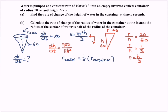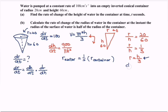Apply the chain rule: dr/dt = (dh/dt) × (dr/dh). Focus on r in terms of h: since r = h/3, differentiating gives dr/dh = 1/3.